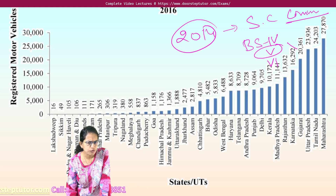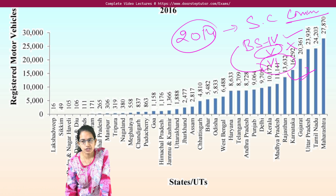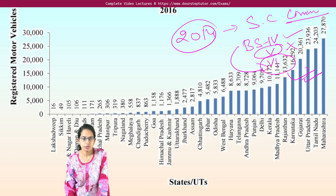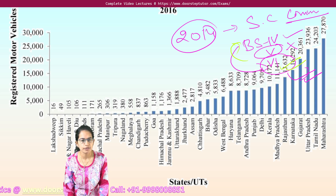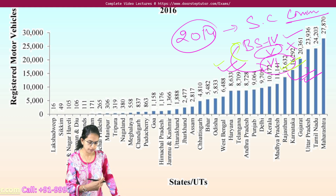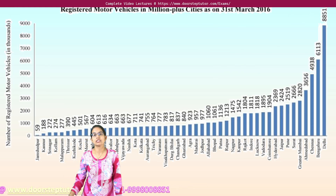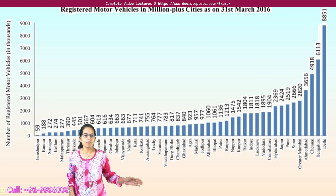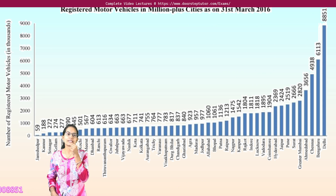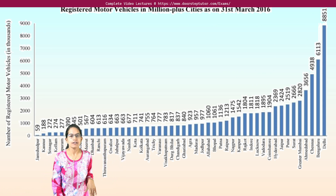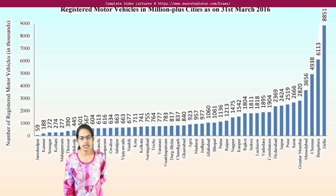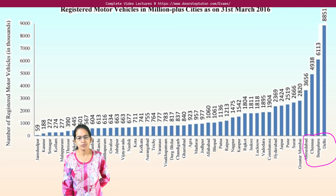BS5 norms were skipped in India. After BS4, it moved directly to BS6 norms under the Auto Fuel Vision Policy 2025 proposal guidelines. Finally, BS6 replaced BS4 norms — this was an important landmark in the history of bringing more stringent regulations on vehicular emissions. If we look at only the number of vehicles in million-plus cities, we see a significantly higher number of vehicles in four cities.